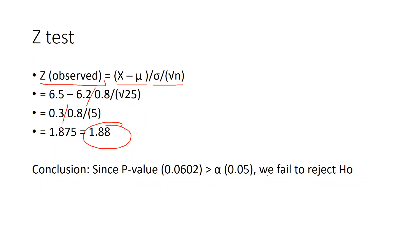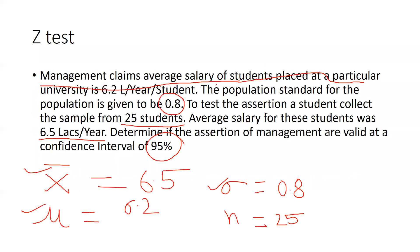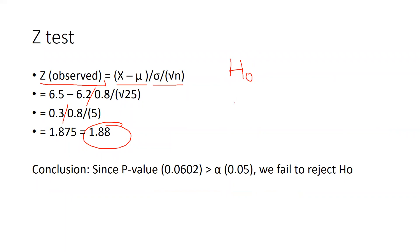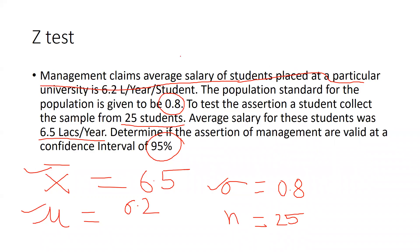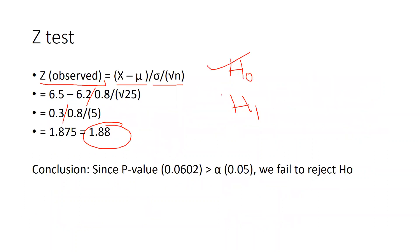How do we reject or accept the null hypothesis? The null hypothesis states there is no difference between the salary claimed by the university and the actual sample mean — no difference between what the university claims (6.2 lakh per annum) and what students are actually getting. The alternate hypothesis says yes, there is a difference. We need to determine whether to accept the null hypothesis or reject it.